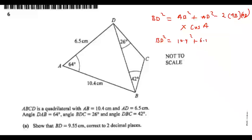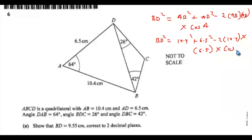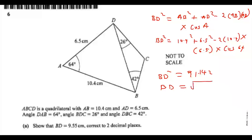If you input this into a calculator, the value of BD² equals 91.142. Taking the square root of both sides, BD equals the square root of 91.142, which gives BD equals 9.55 centimeters — which is exactly what we were asked to show.